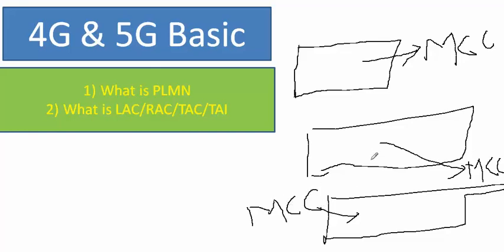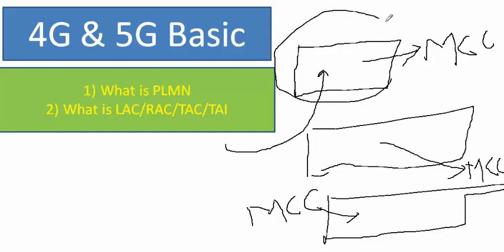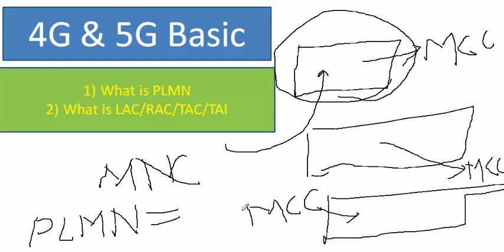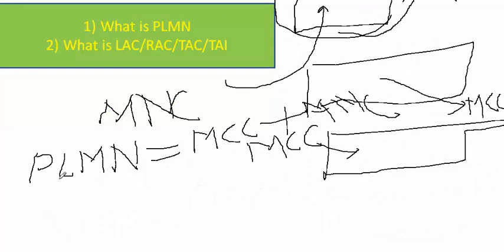Each country has a unique MCC so we can identify the country by that code. Second, if we are using one operator, how can we identify the operator in a location? Each operator is given one unique code called the Mobile Network Code, or MNC. So PLMN equals MCC plus MNC.